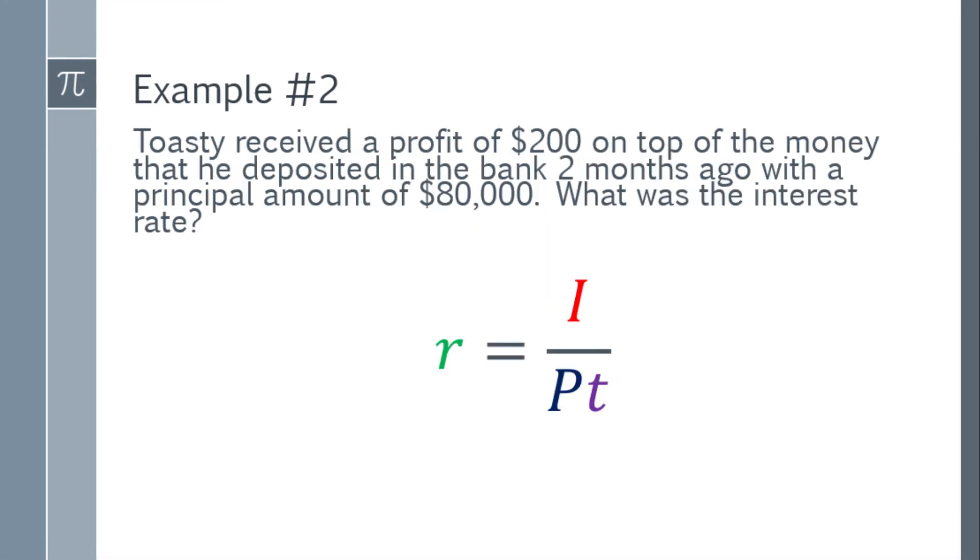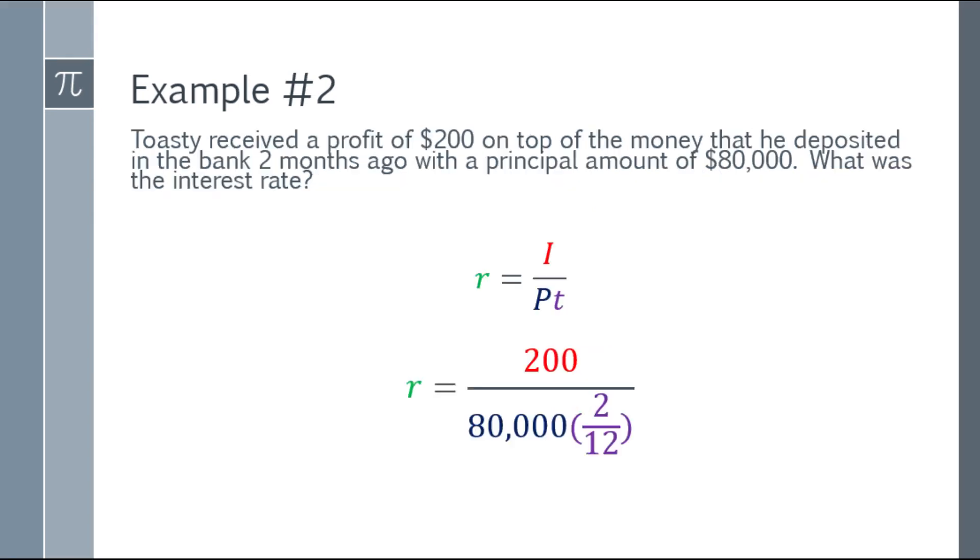So again, place the formula, R equals I over quantity PT, and substitute it. So lagin natin yung given ulit. You have R equals 200 over the quantity 80,000 times 2 over 12.